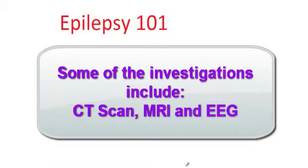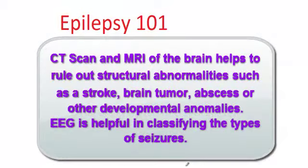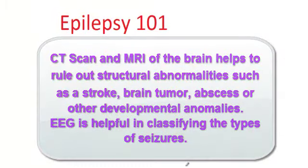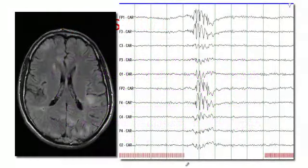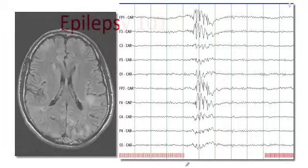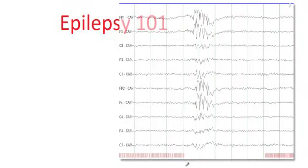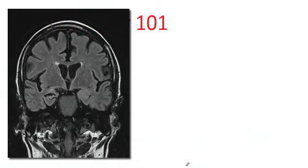The diagnosis is made by the clinical history, by what the patient and the family describes to us. The other investigations are trying to identify what kind of epilepsy a person has, trying to rule out anything that can be progressive, trying to identify the classification of seizures, so that you can choose the best medication that is available.